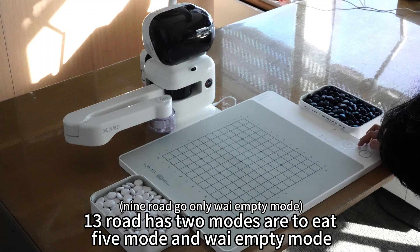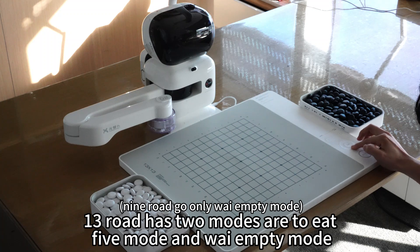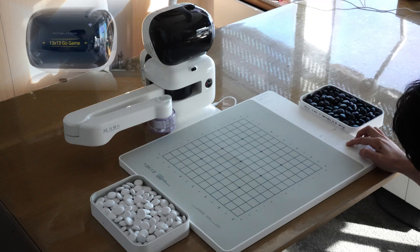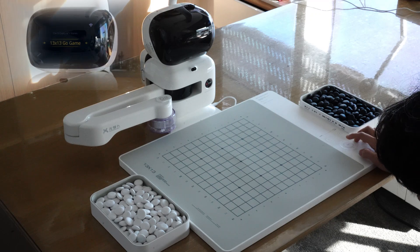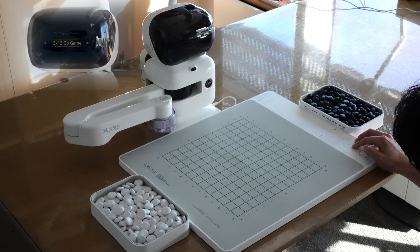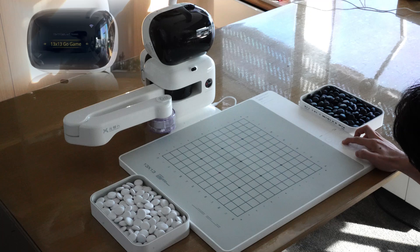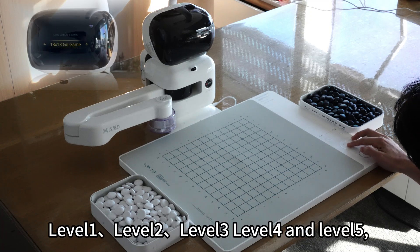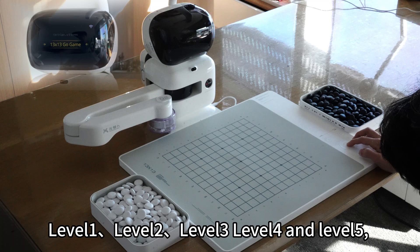The 13-row has two modes: 2-8, 5-mode and Y-empty mode. Choose Y-empty mode. There are five levels: level 1, level 2, level 3, level 4, and level 5.